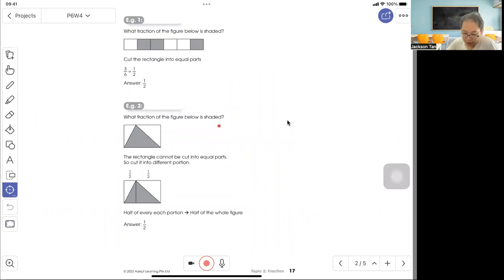Example 2: What fraction of the figure below is shaded? Here, this triangle you cannot cut into equal parts, but you can cut into different portions. After you cut, you get this. Can you see that this is half of the rectangle? Half of each portion is half of the whole figure. This is a theory you need to learn about, and it will give you half.